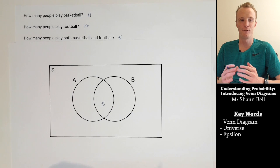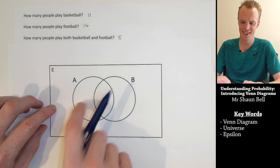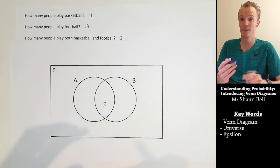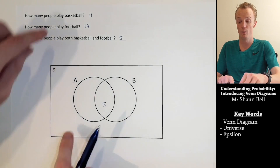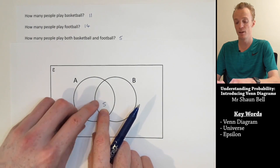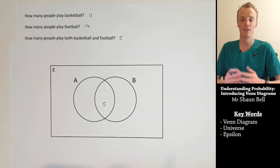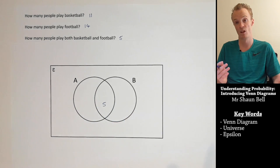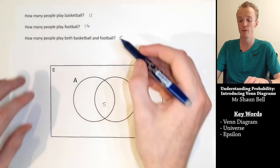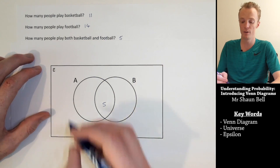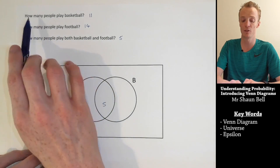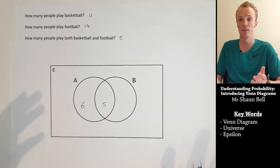A common mistake is to then put 11 in the remaining basketball space, but that's not quite right. This circle should contain 11 people total, but we've already represented 5 of those because they also play football. That means we need the remaining people that only play basketball: 11 minus 5 equals 6. We represent those 6 people in the left-only section of circle A. To check: 6 plus 5 equals 11, confirming we've filled it out correctly.